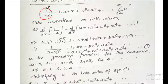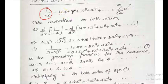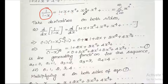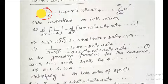So 1 divided by (1 minus x) is a generating function of the sequence 1, 1, 1, 1, and so on. Now we are going to use this function — we can generate many other functions using this generating function.